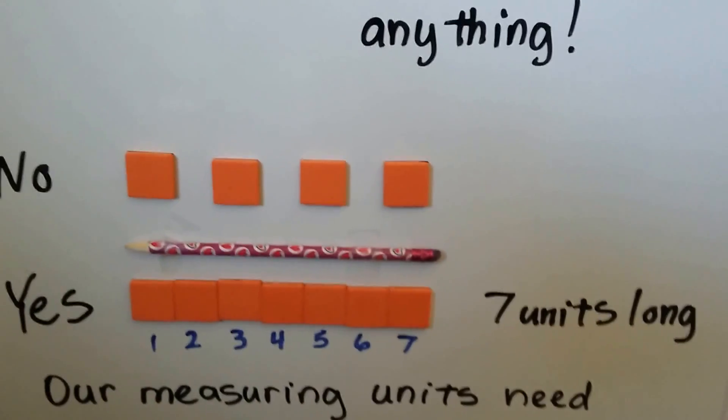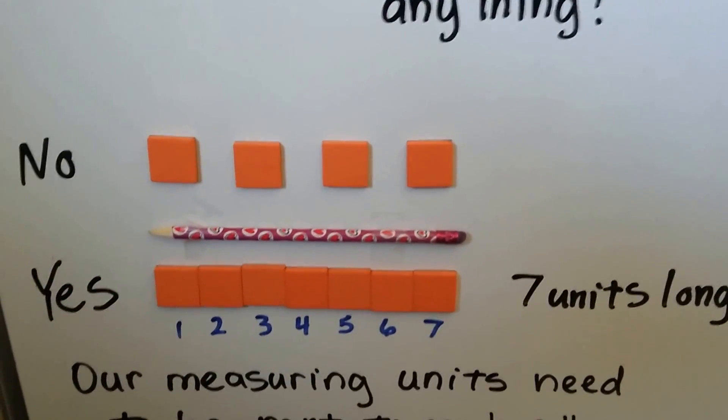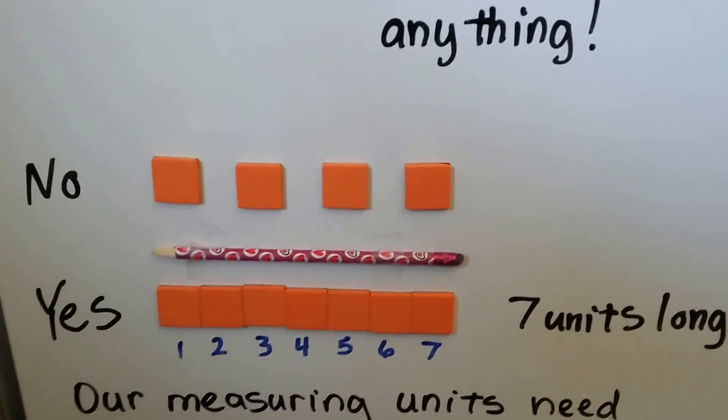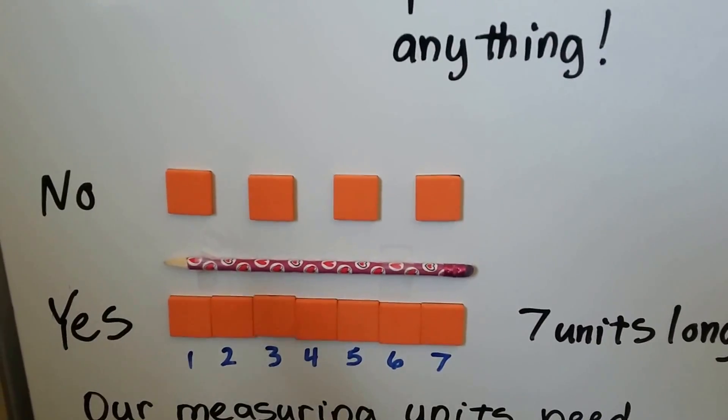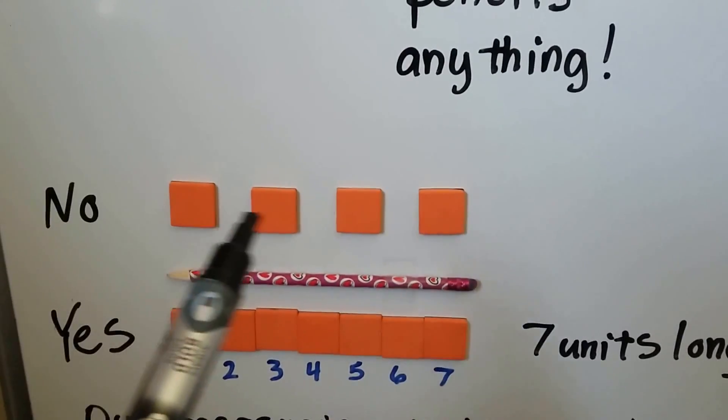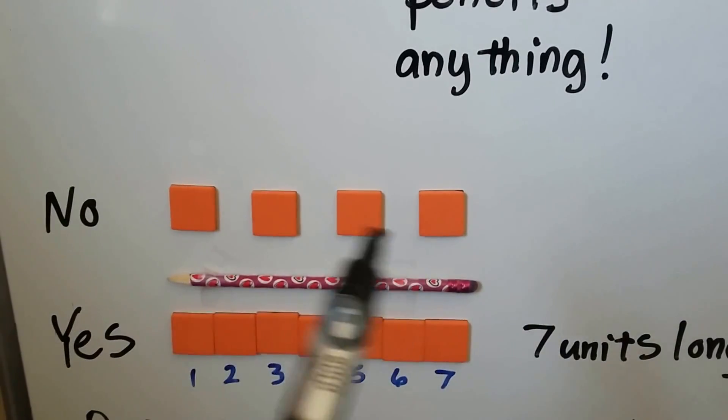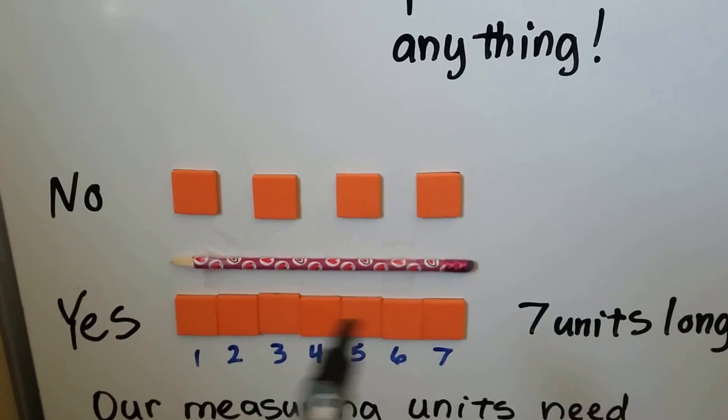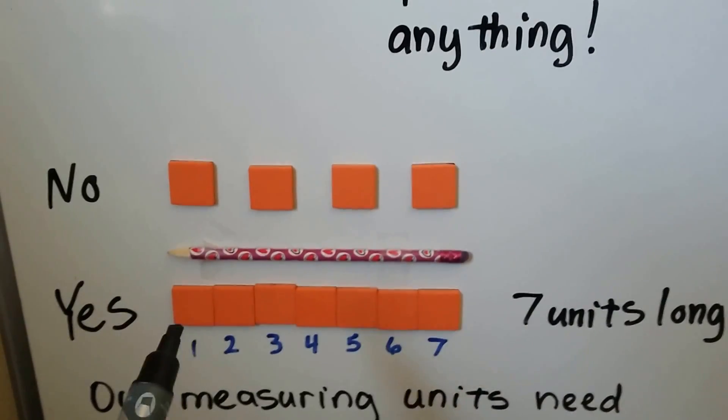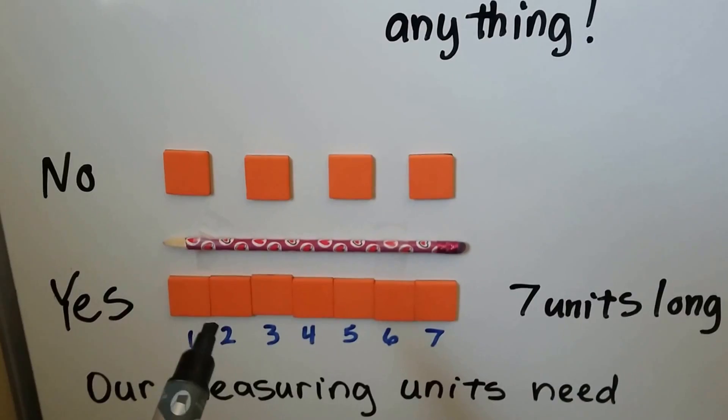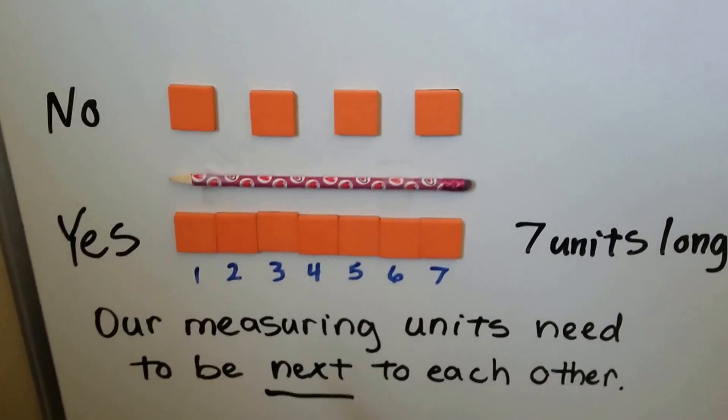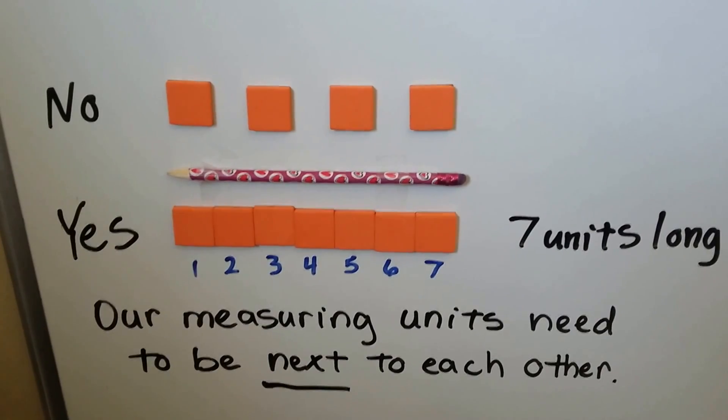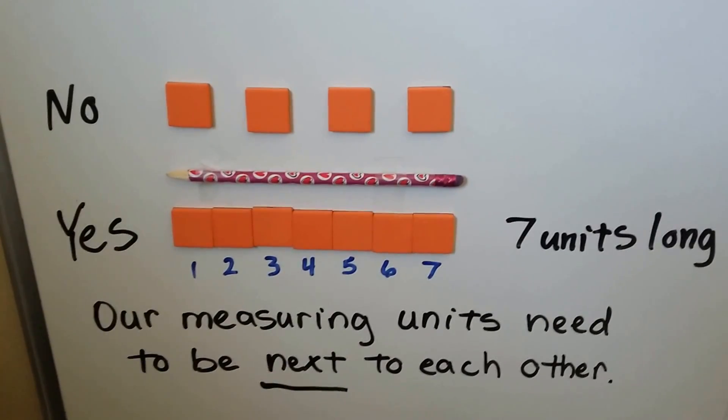We're measuring this pencil and we're using orange squares as our non-standard unit of measure. You don't want it to be spaced out like this. This is the wrong way. To measure it with these orange squares, you want them to be side-by-side completely next to each other, touching like that. This pencil is seven units long. Our measuring units need to be next to each other.